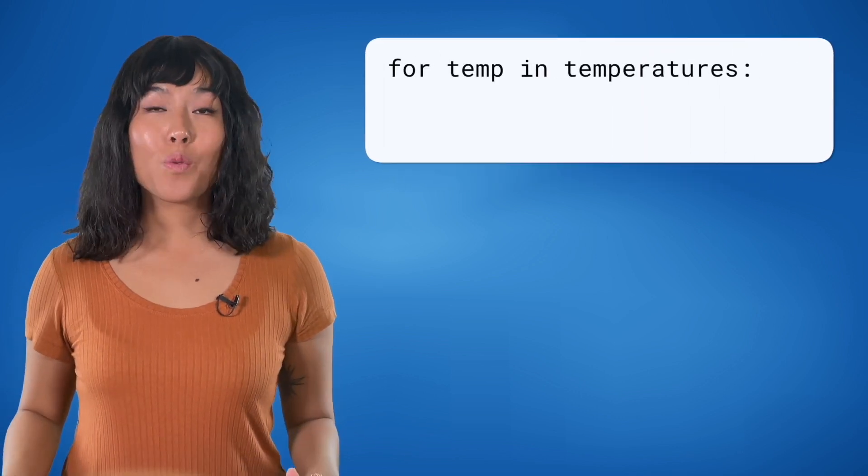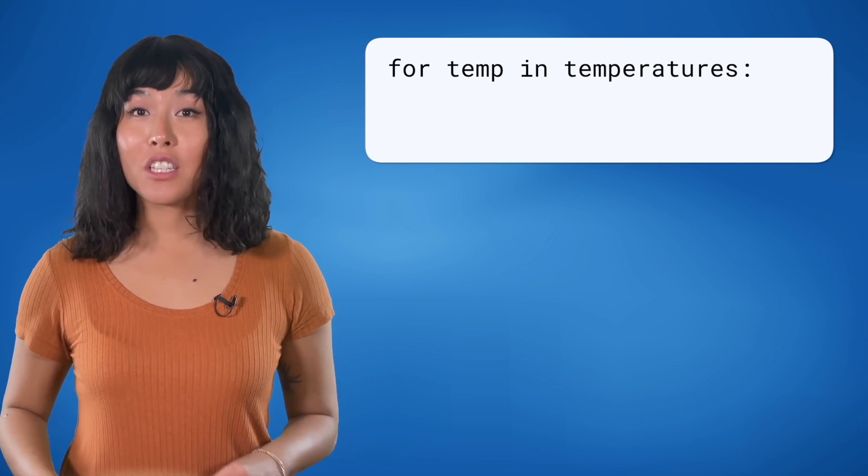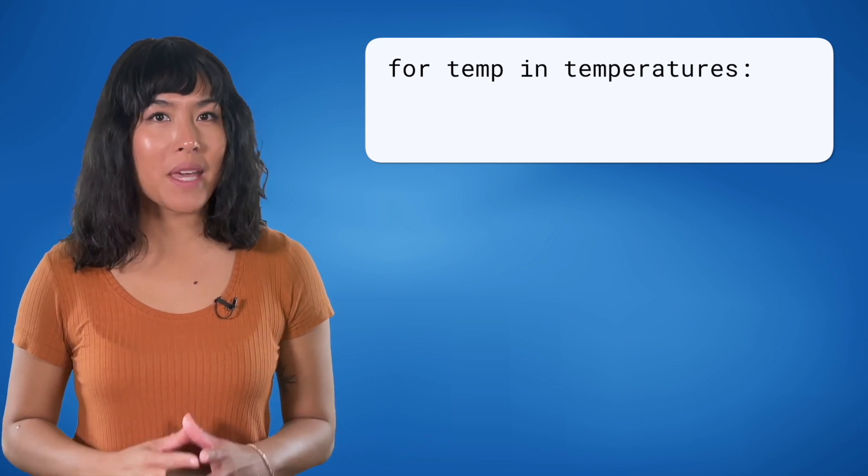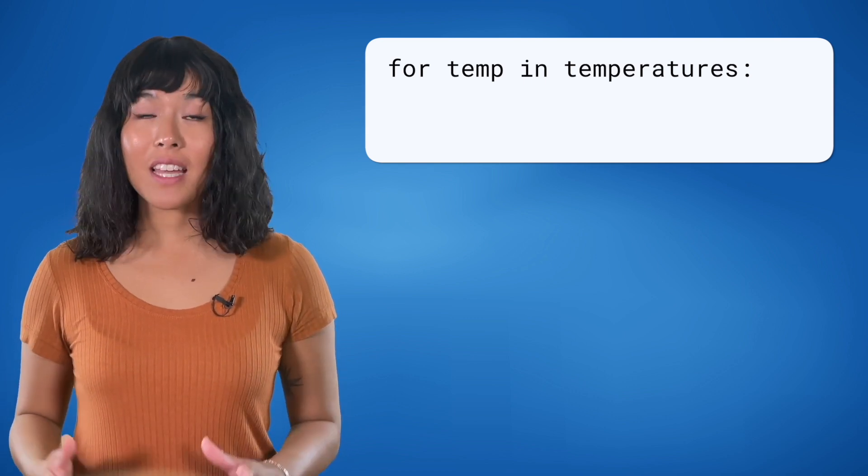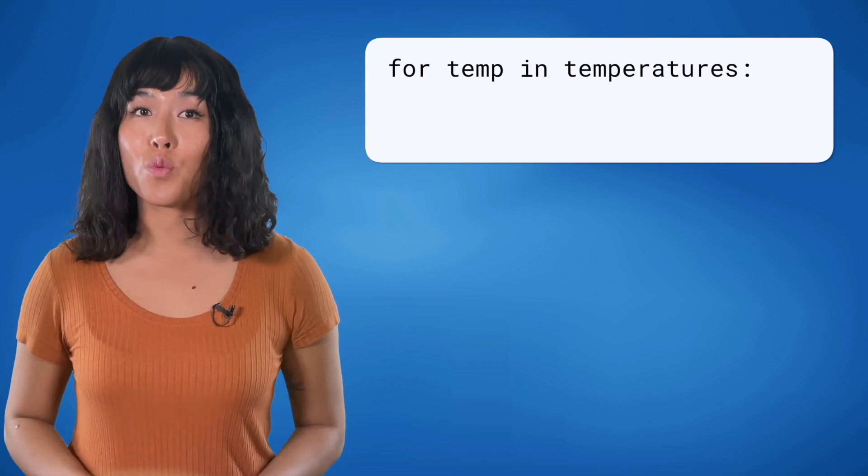Now, we use a for loop to go through each temperature in the list one by one. The loop starts here, for temp in temperatures. It's like looking at each temperature measurement, starting with the first one.